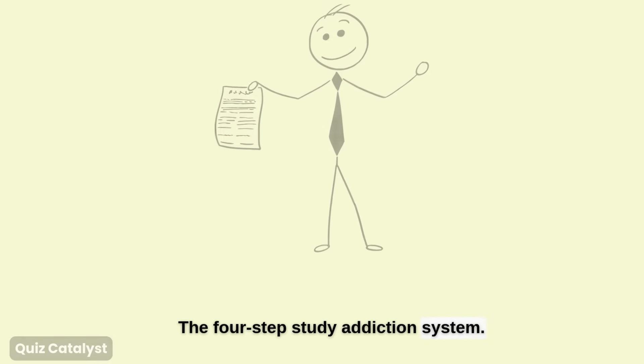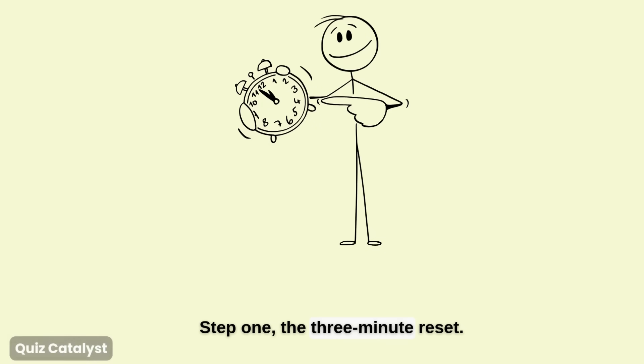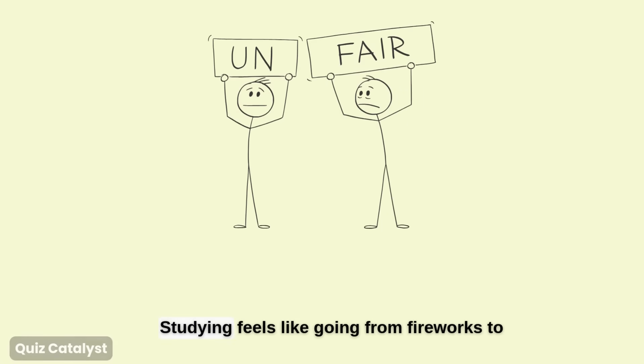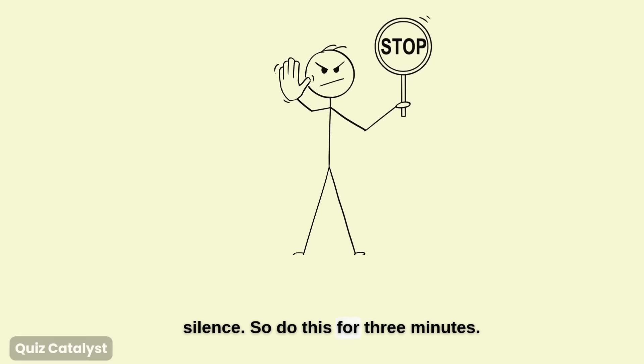The four-step study addiction system. Step one, the three-minute reset. Before you study, your brain is overstimulated. Fast sounds, fast visuals, fast apps. Studying feels like going from fireworks to silence.